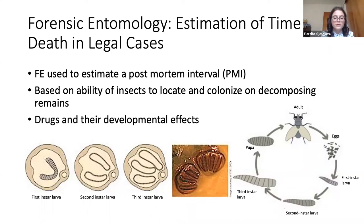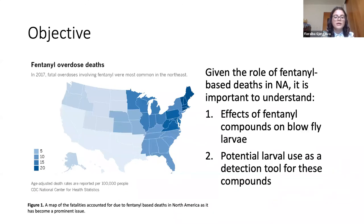The fly life cycle starts with eggs, which hatch into larvae. Larvae then undergo three developmental stages — first, second, and third instar — distinguished by their spiracular slits and their posterior end. Then they reach pupation, followed by emergence to adult fly. As insects are known to preserve toxicological information, it is important to determine if drugs can be detected throughout these developmental stages. Given the rise of fentanyl-based deaths, my project focused on blowfly larvae to determine if fentanyl metabolites impact larval development and if the metabolites can be detected at various developmental stages.